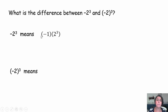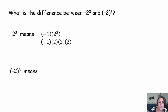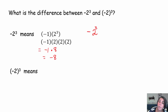Our negative times 2 to the third means negative 1 times 2 to the third — that means negative 1 times 2 times 2 times 2. We know 2 times 2 is 4, times 2 is 8. So that's negative 1 times 8, or negative 8. Negative times 2 to the third power is negative 8.